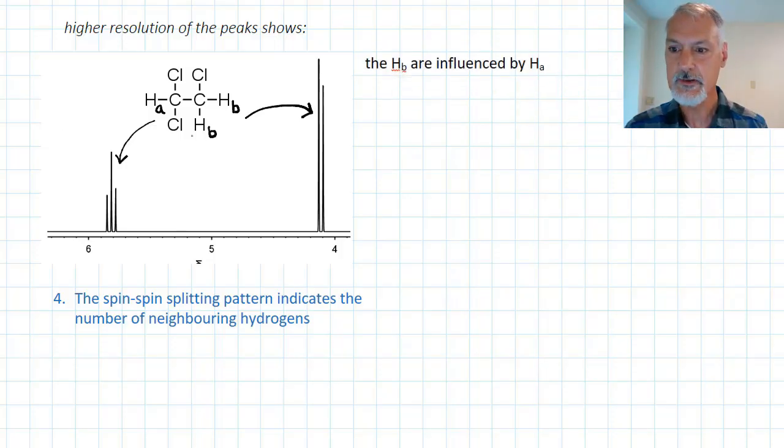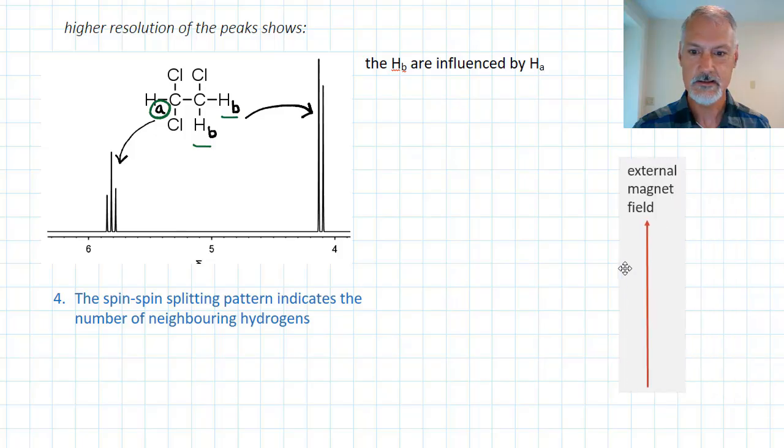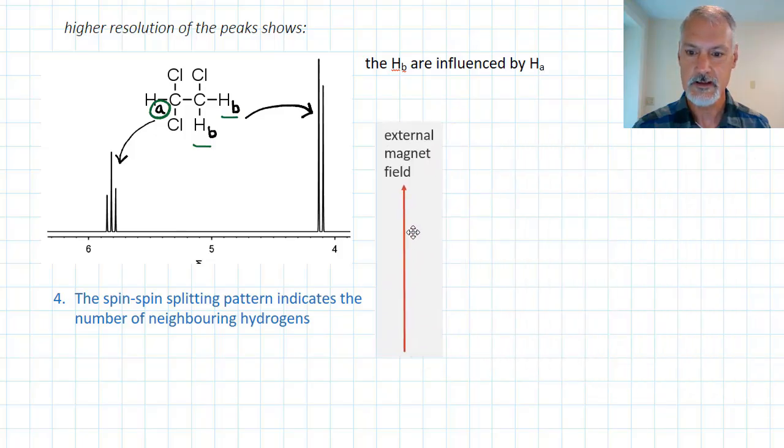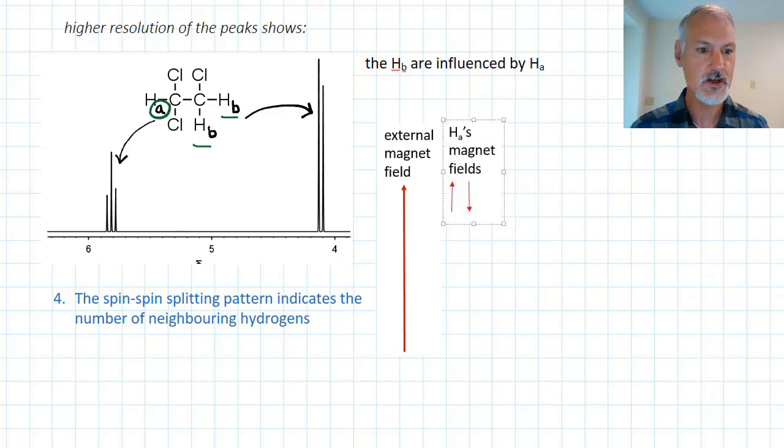The hydrogens that I'm describing present here in environment B, they are influenced by the presence of A. A somehow affects their environment. Let's look at how they do that. To generate a hydrogen NMR, we require an external magnetic field, which I'll indicate here by this large arrow. The hydrogens at A can be thought of as tiny magnets, each generating their own magnetic field based on how they spin.